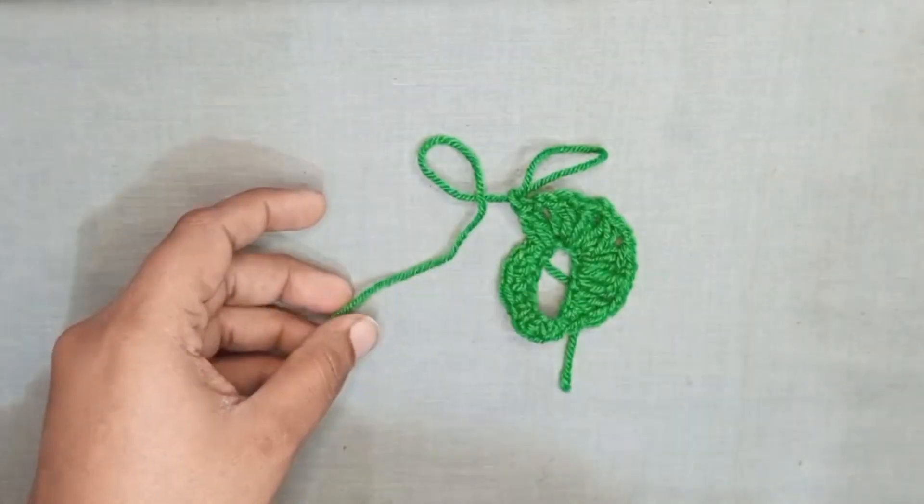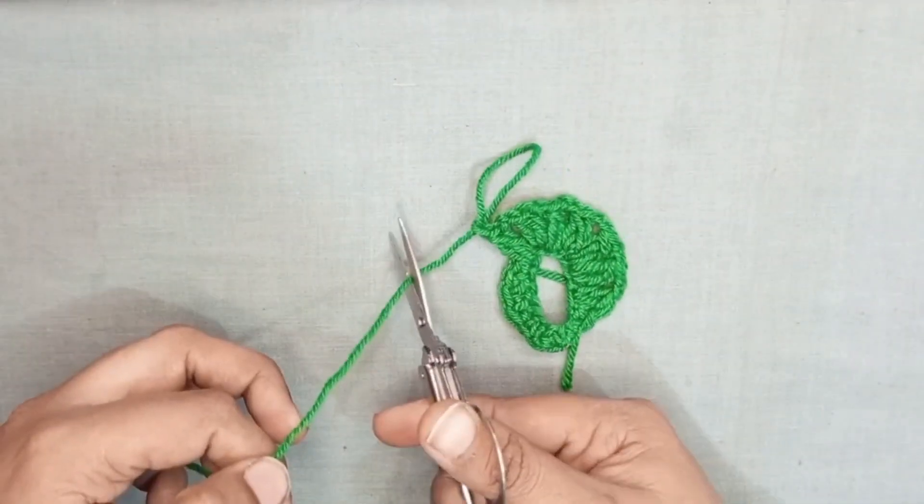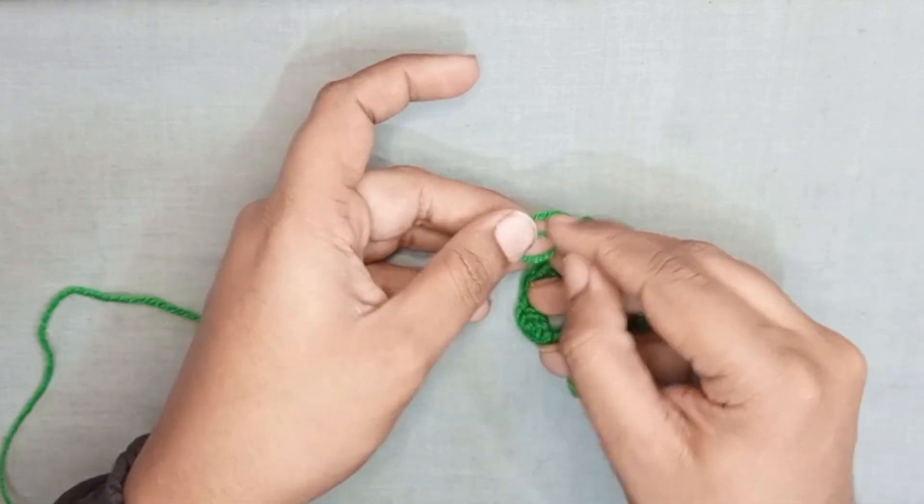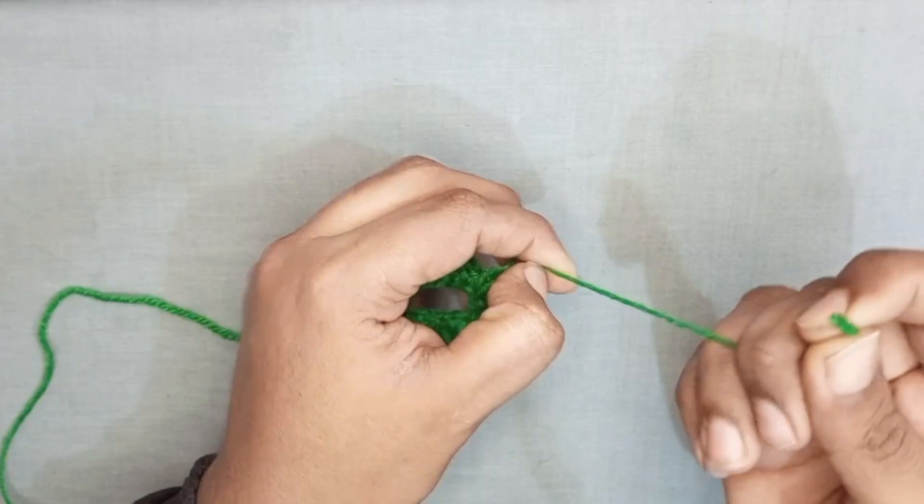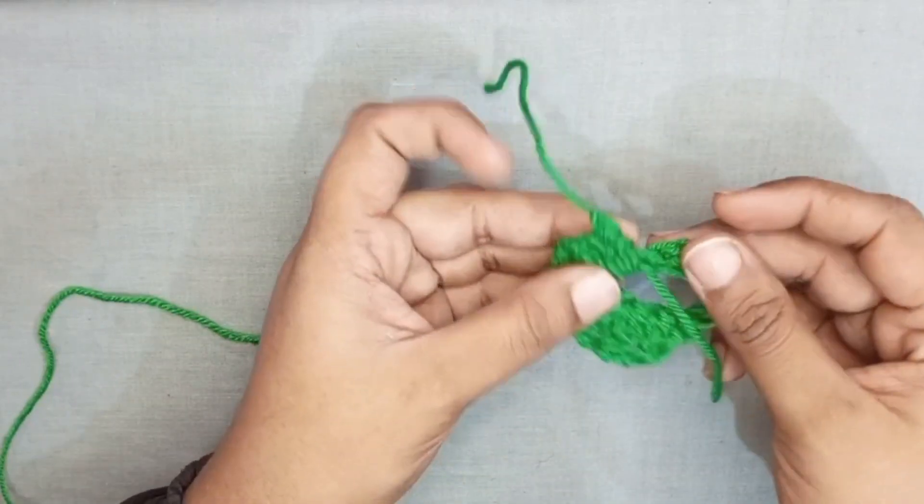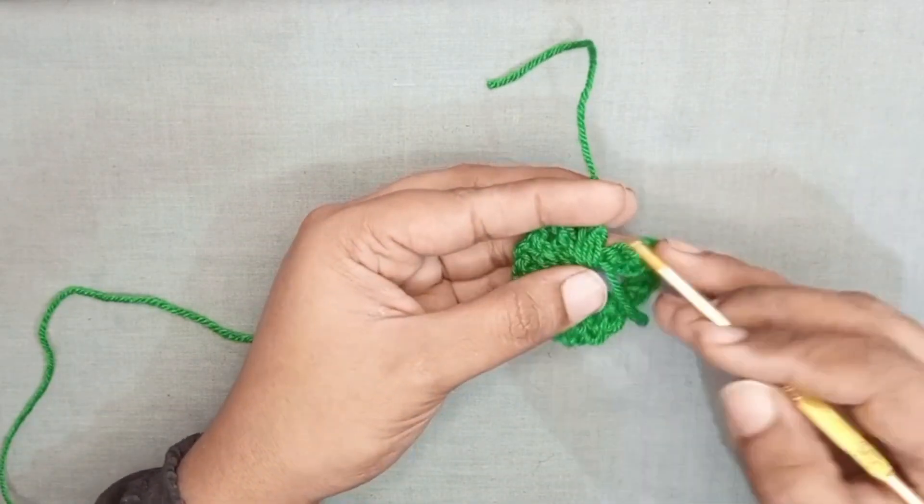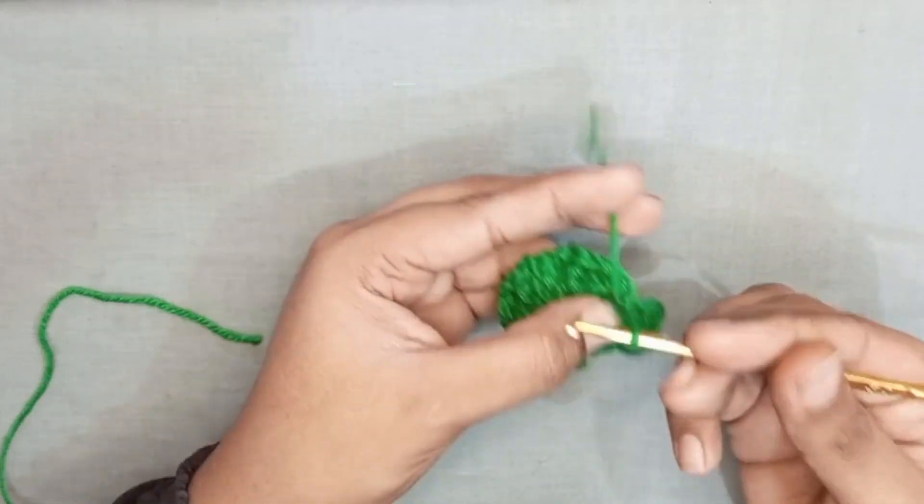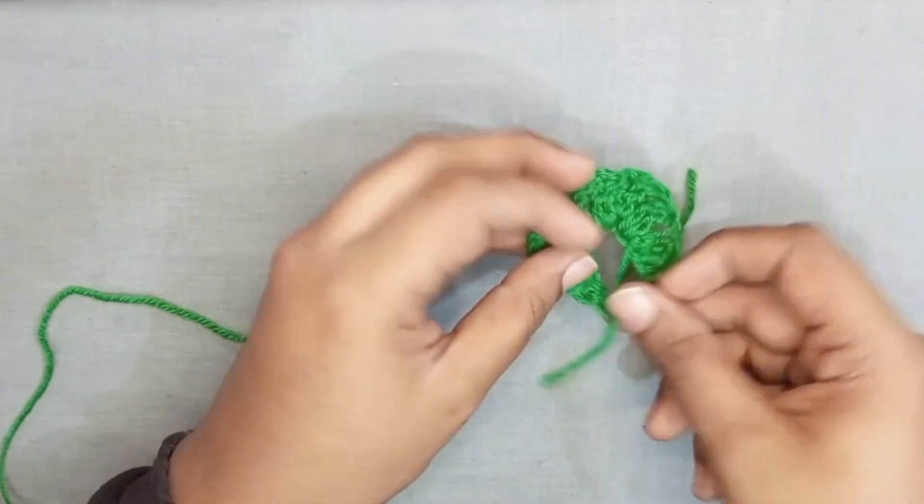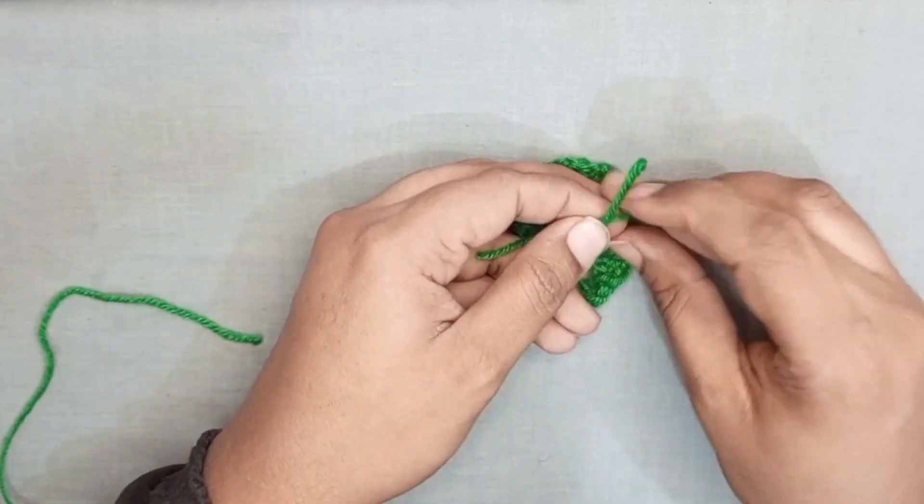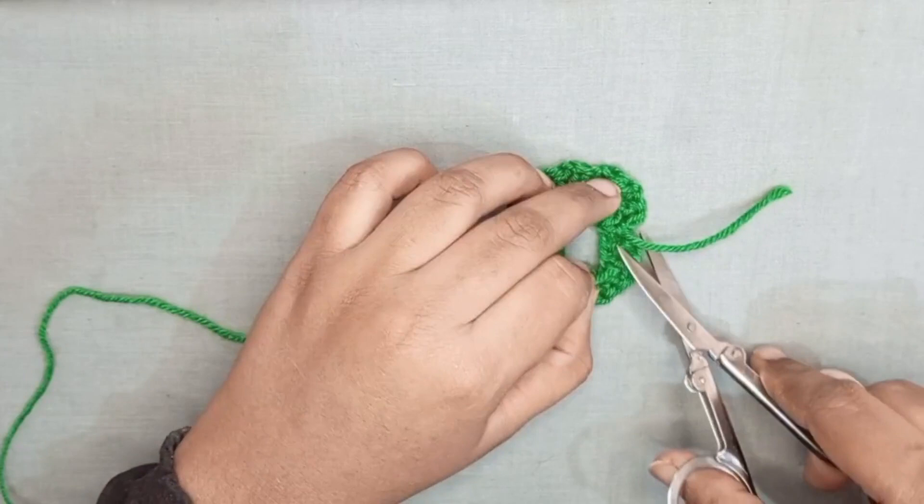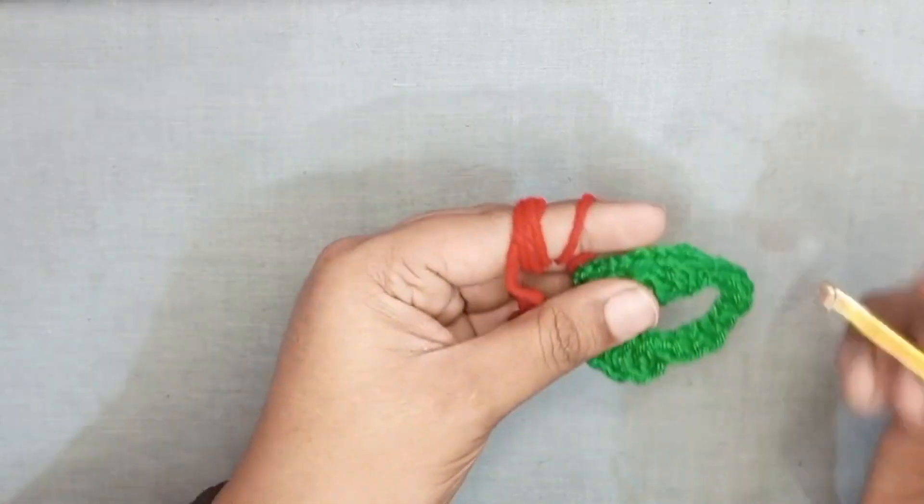And cut the yarn. Back side, pull the yarn and make knot. Cut extra yarn, join red color.